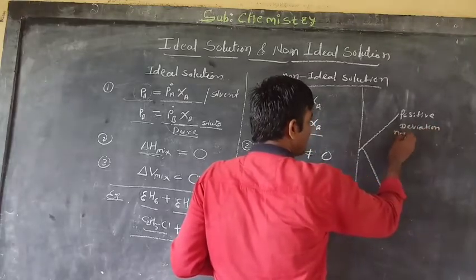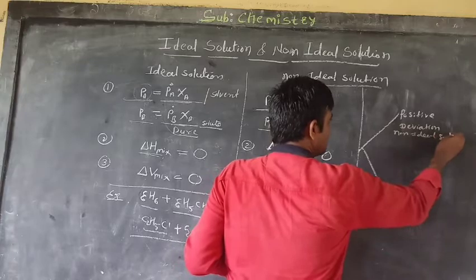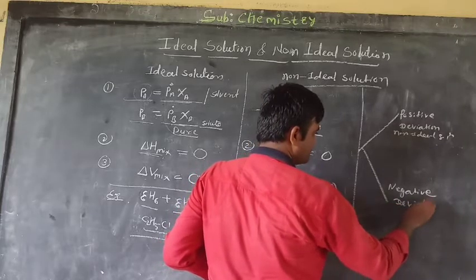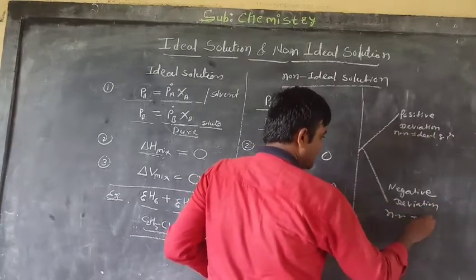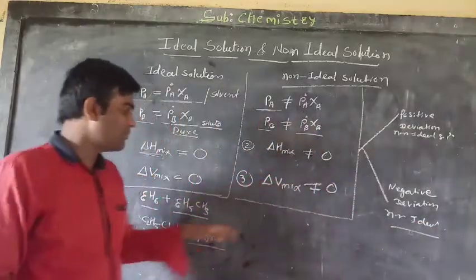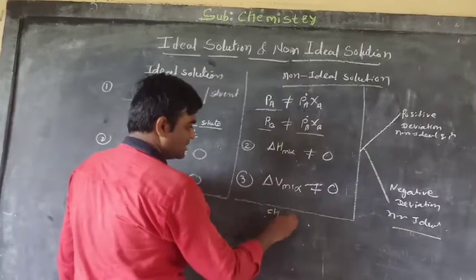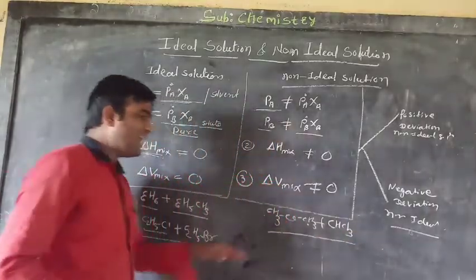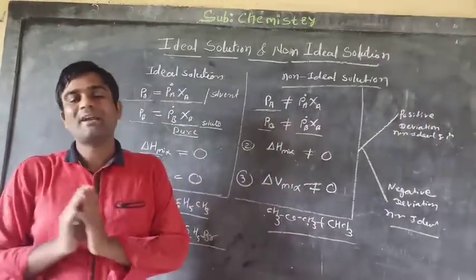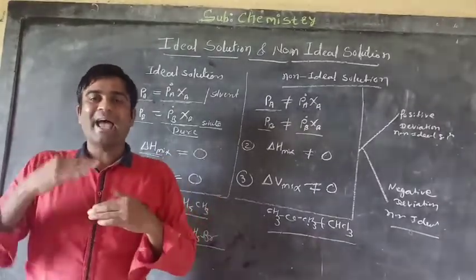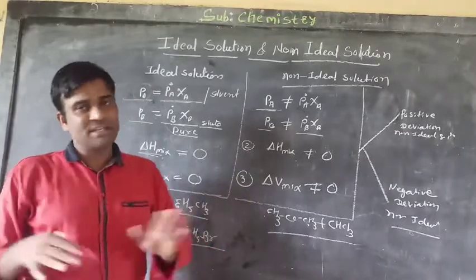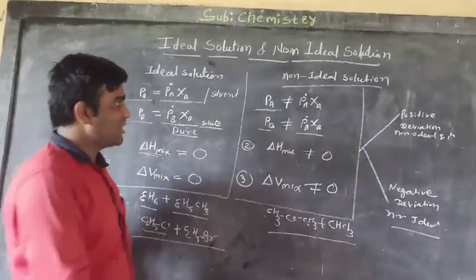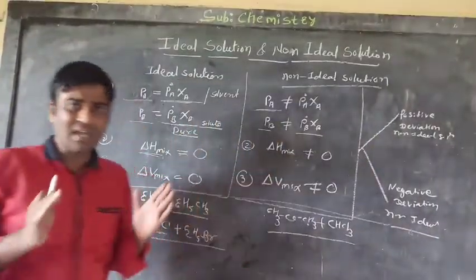The two types are: positive deviation non-ideal solution and negative deviation non-ideal solution. For example, chloroform (CHCl3) plus acetone (CH3COCH3) — chloroform and acetone form a non-ideal solution, meaning when they are mixed, enthalpy changes occur and volume changes occur, and the vapor pressure of the solvent is not equal to its pure form value.